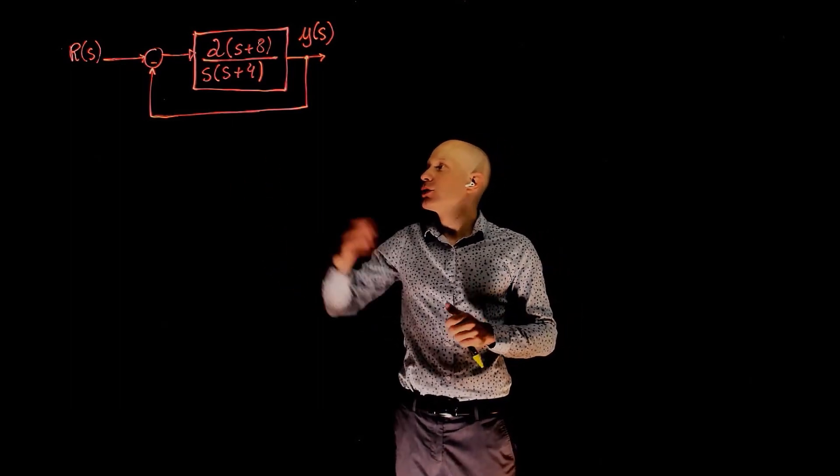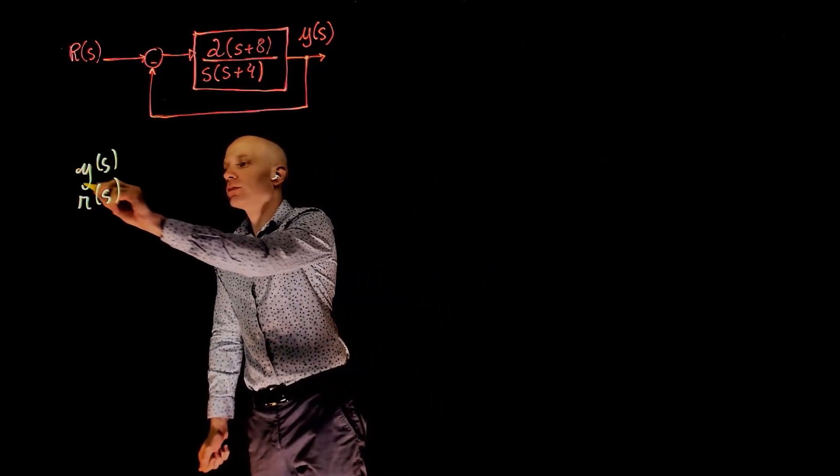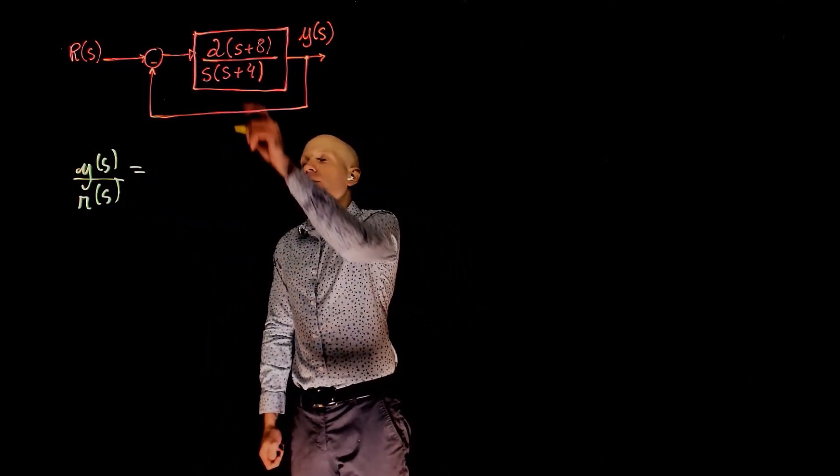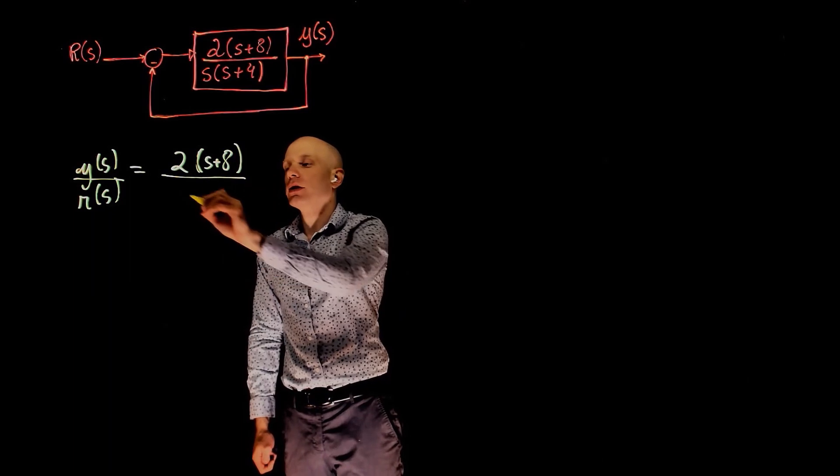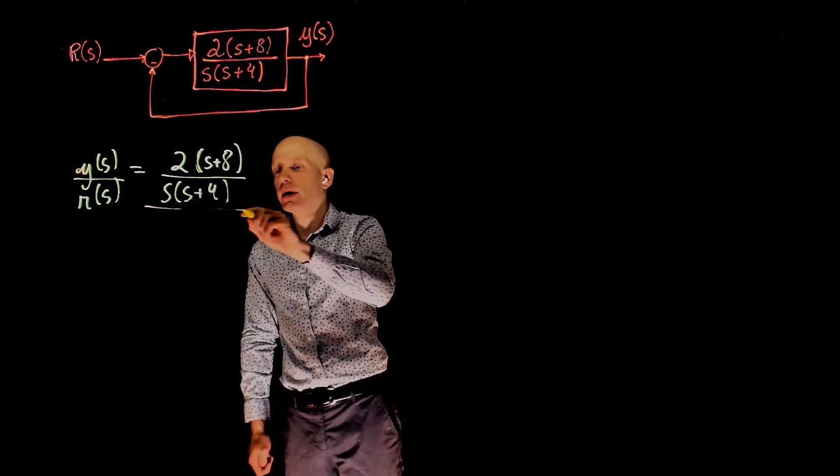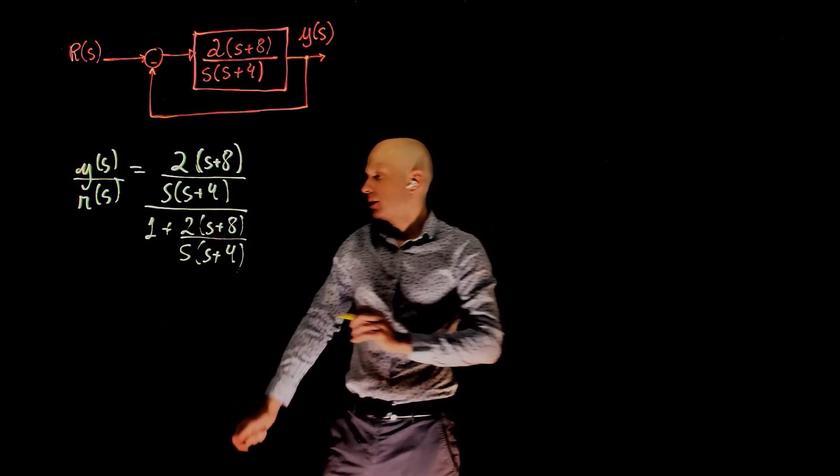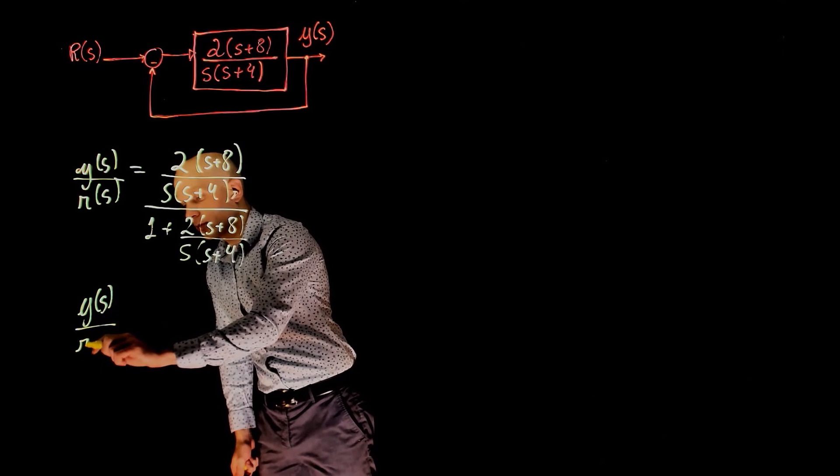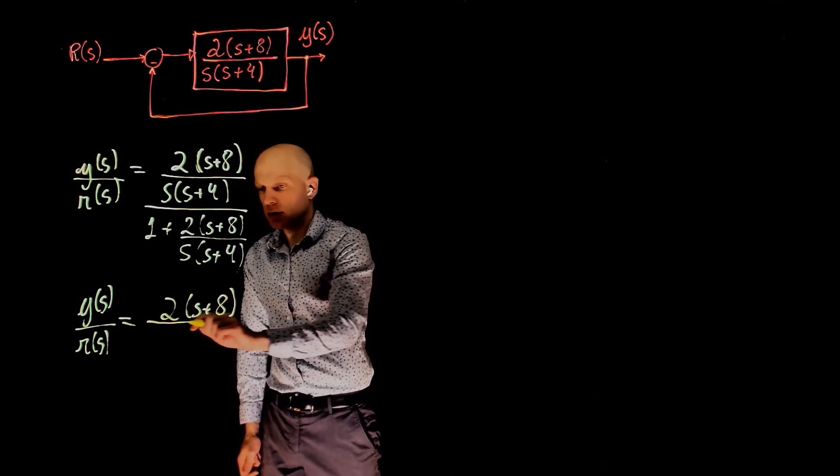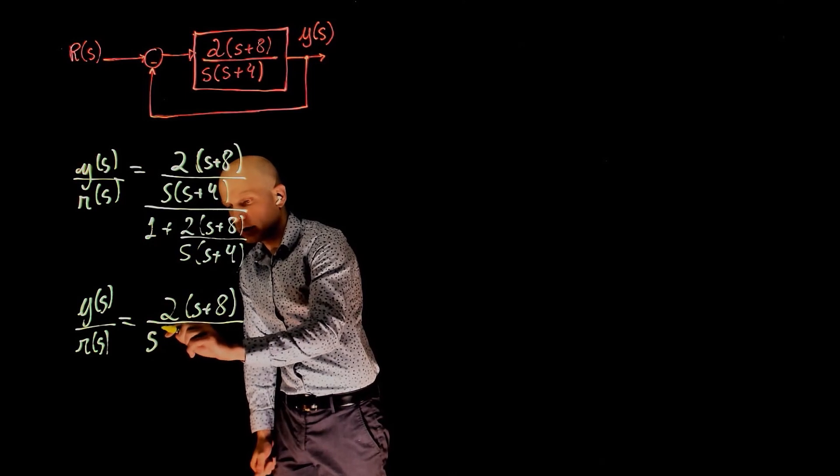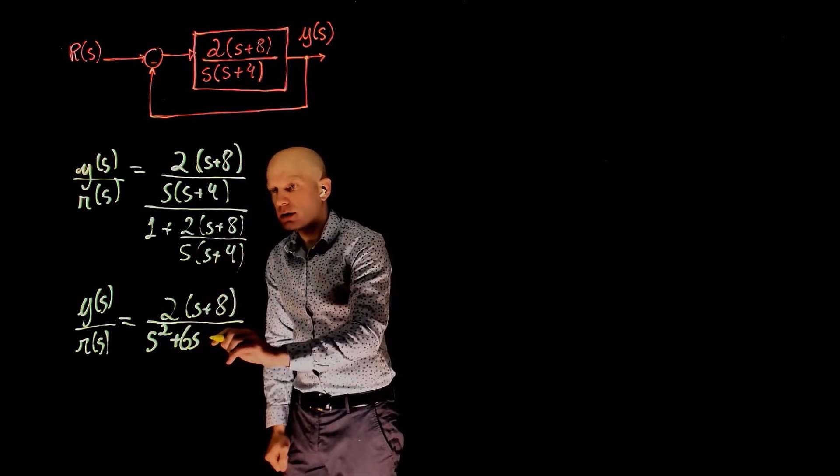The first step here is to find the closed-loop transfer function y over r. y over r is simply the plant function 2s plus 8 divided by s times s plus 4, all divided by 1 plus the same function. 2s plus 4s plus 2s plus 6s. We know now how to simplify this, and the result here after simplification is 2s plus 8 divided by this, which multiplies 1, so we have s squared plus 4s plus 2s, that is plus 6s, plus 8.